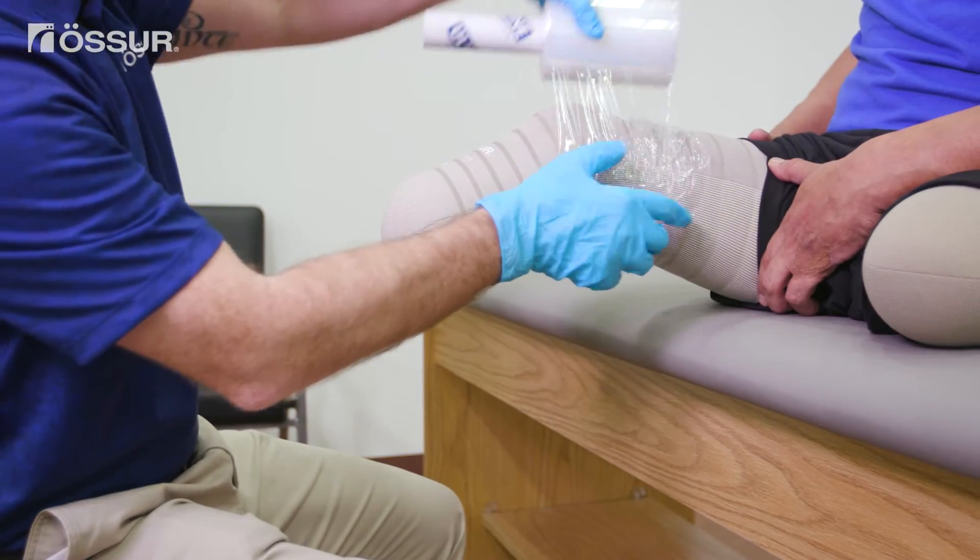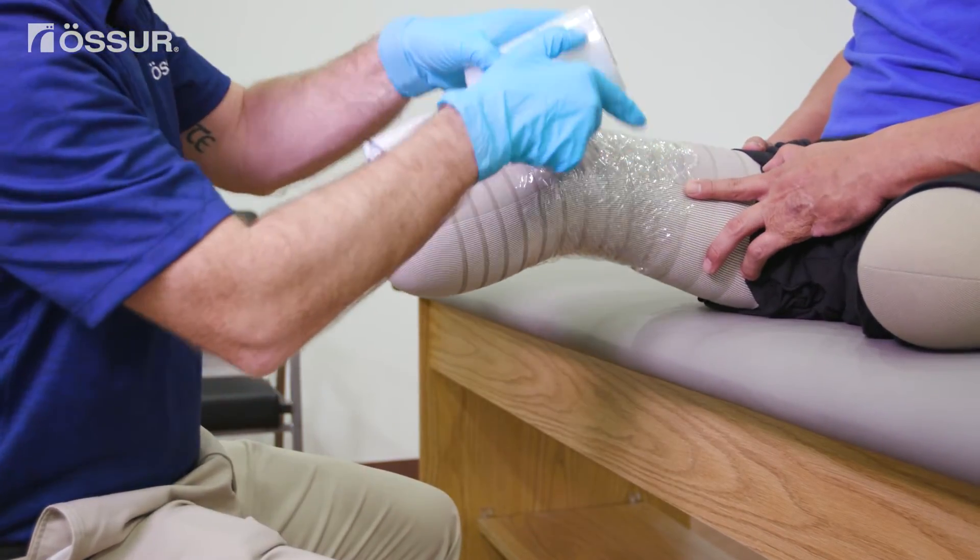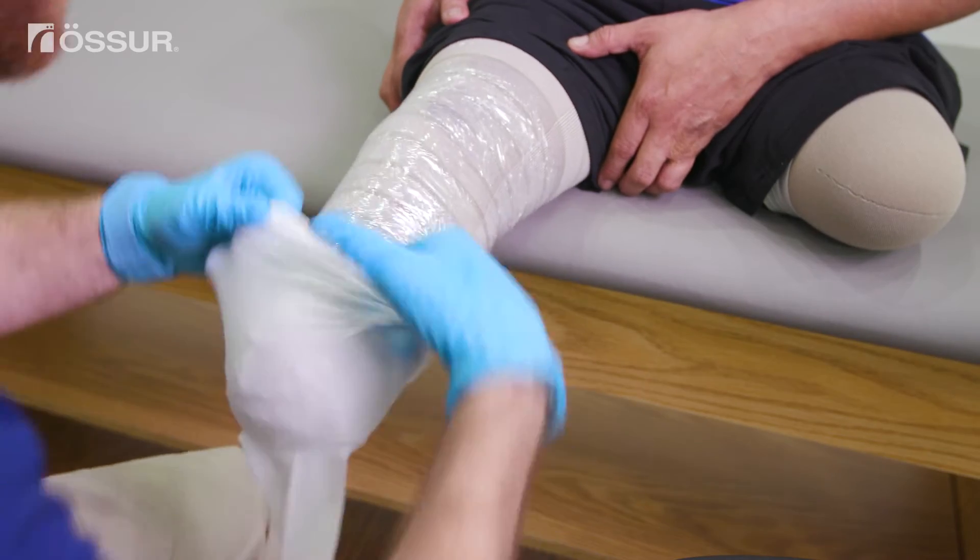The first step is to wrap the limb with plastic wrap to protect the liner fabric from your marker. Then cover the limb with a nylon.